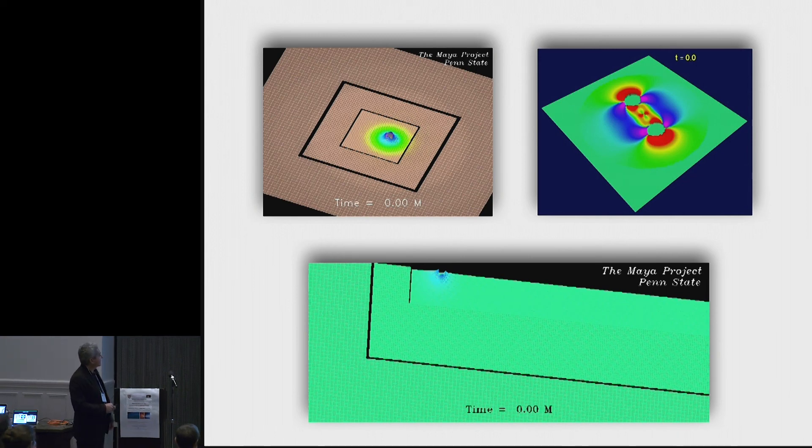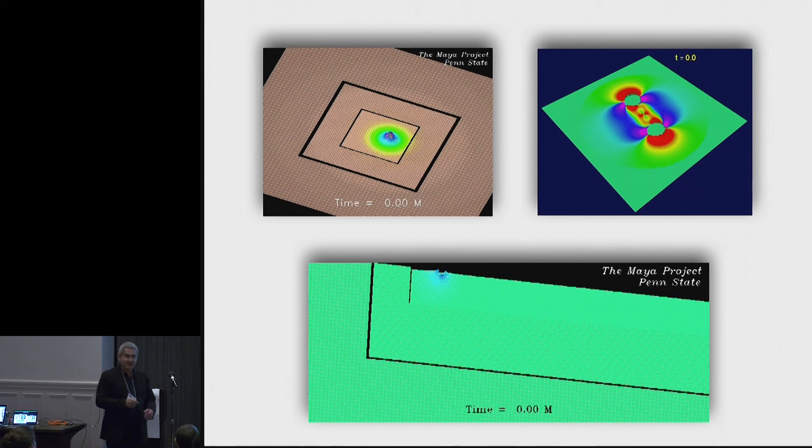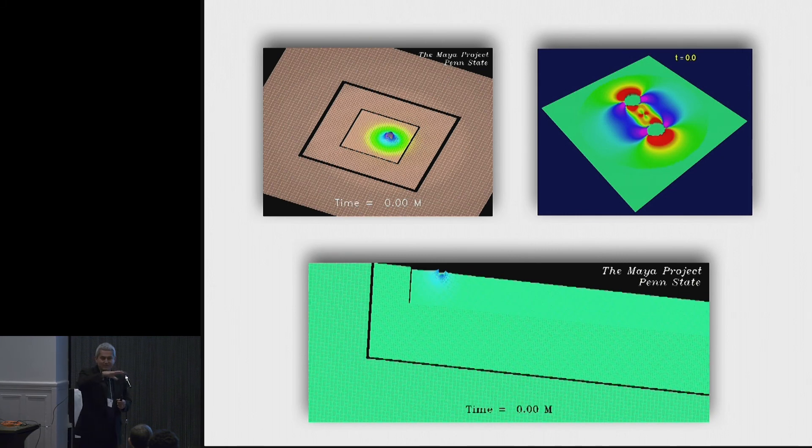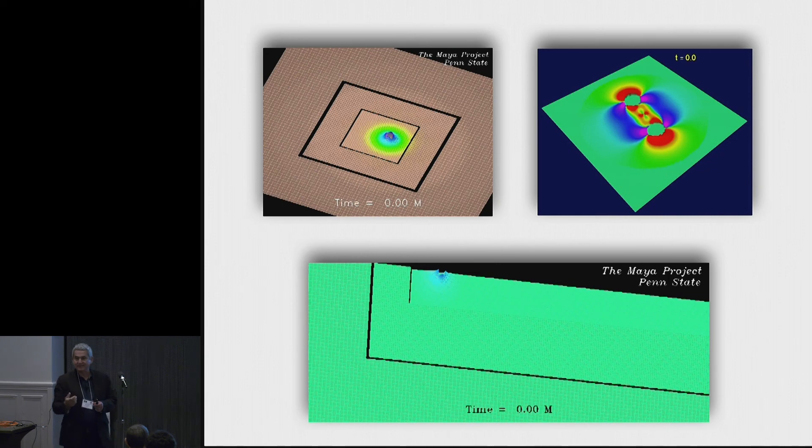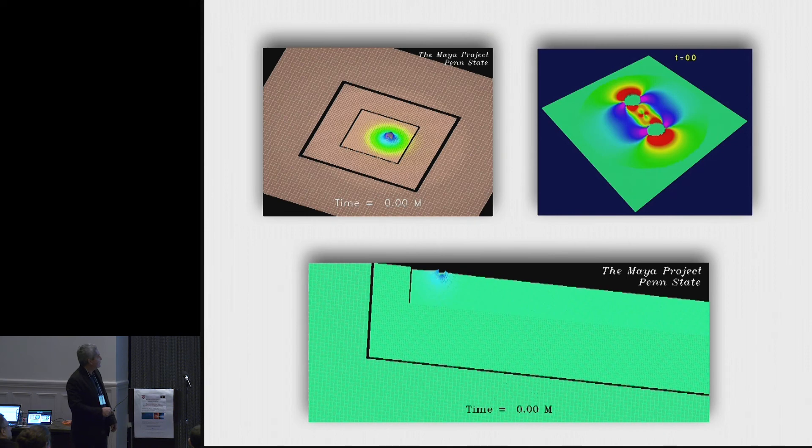So what I have here is a single black hole. And what you'll see is the black hole is going to go into a circular orbit around nothing. And the reason that it's around nothing is what we're doing is just moving the coordinates. The black hole stays in one place. We just move the coordinates just to test how robust our numerical algorithm was.